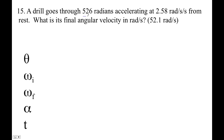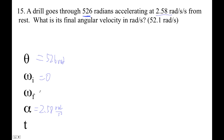A drill goes through 526 radians, accelerating at 2.58 radians per second per second from rest. So rest is zero and the acceleration is 2.58. We're trying to find the final angular velocity — and there's no t given, so we won't use a time-based equation.